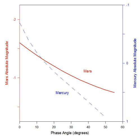The phase curves of many natural satellites of other planets have been observed and interpreted. The icy moons often exhibit opposition brightness surges, and this behavior has been used to model their surfaces.